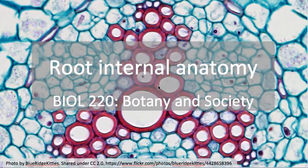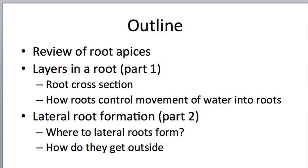What you can see in the background here is a vascular cylinder of a root with some xylem and phloem. The topics we'll talk about are listed here. We will talk first about the different regions of a root apex as a quick review, then look at layers of a root in cross-section starting from the outside and working our way in towards the vascular cylinder, and we'll also talk about how roots control the movement of water.